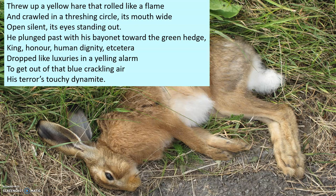That really represents the corruption of nature caused by humans. The soldier then plunges past this dead hare with his bayonet towards the green hedge mentioned earlier. Then we get a list of reasons soldiers were given to convince them to go to war: 'King, honour, human dignity' — these grand-sounding things. But Hughes doesn't even finish the list — he writes 'etcetera,' like he's given up on the list, perhaps as the soldier has given up believing in those things. These ideas are 'dropped like luxuries' — things you can't afford to carry anymore. 'His terror's touchy dynamite' — strong alliteration, and he's almost become a weapon himself.